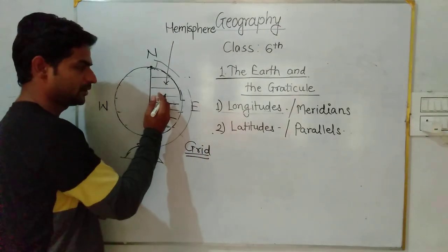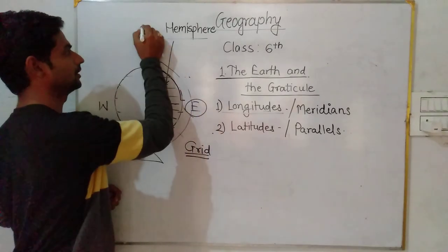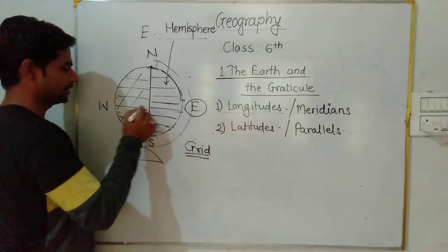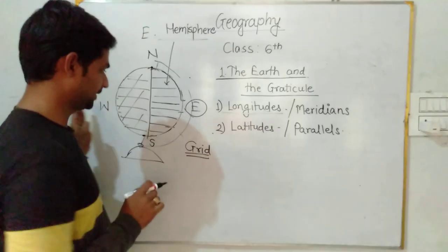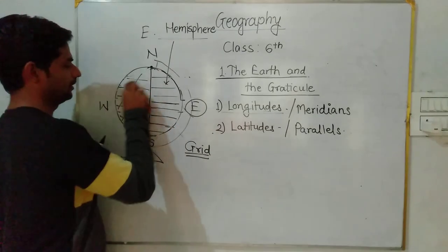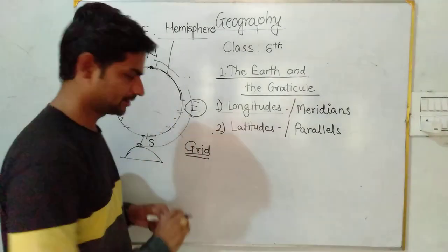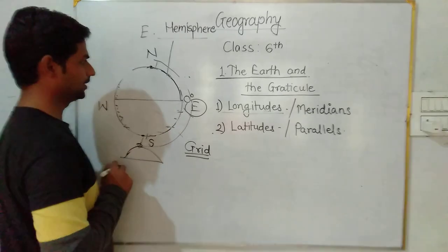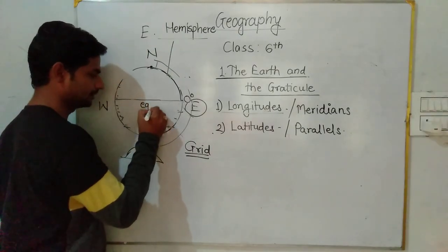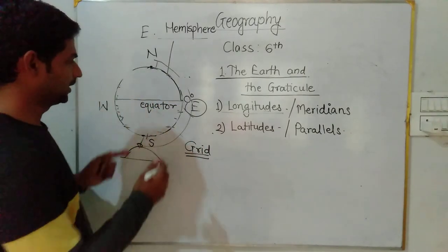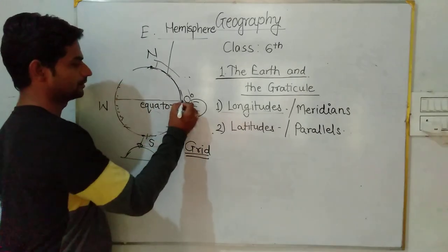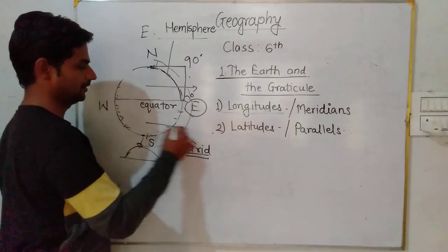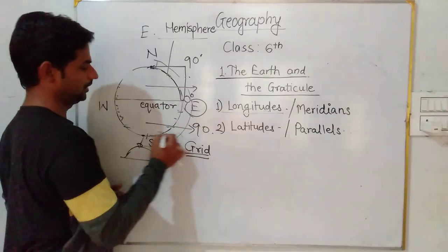This hemisphere is located toward the east direction, that's why this is called the Eastern Hemisphere. This hemisphere is called the Western Hemisphere. Due to the lines of latitude or parallels, there is one major parallel also marked as zero degree — this parallel is also called the equator. There are total 90 parallels in the Northern Hemisphere and 90 parallels in the Southern Hemisphere.